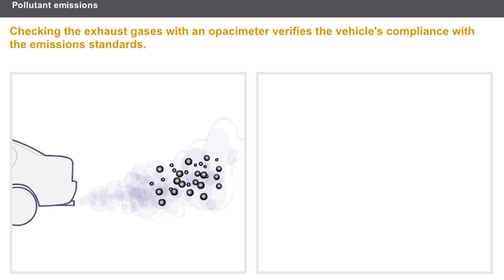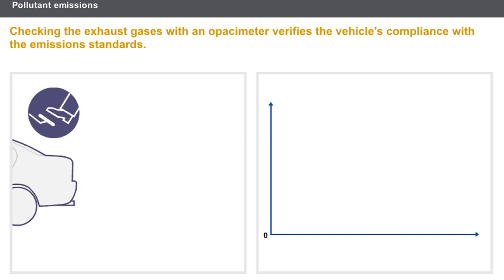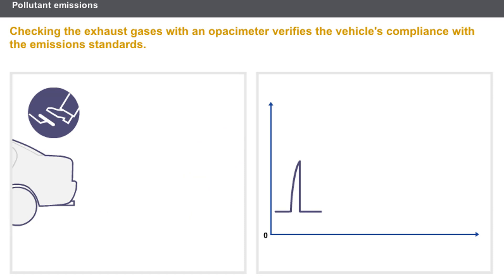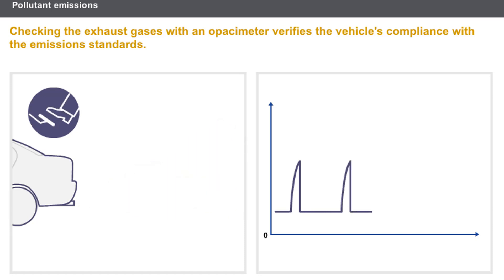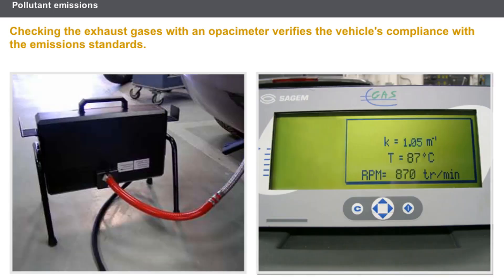The higher the number of particles, the greater the opacity and therefore the higher the pollution level. The opacity test requires several full load acceleration cycles to be carried out. Checking the exhaust gases with an opacity meter verifies the vehicle's compliance with the emissions standards.